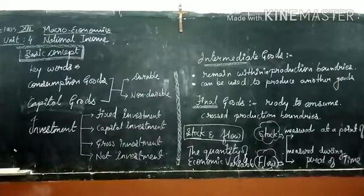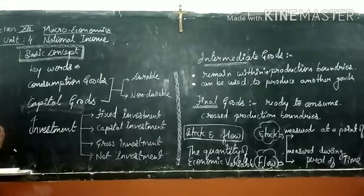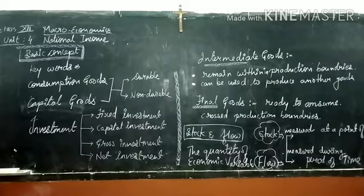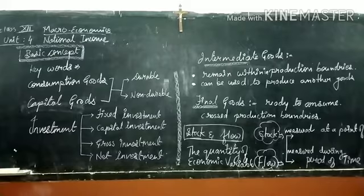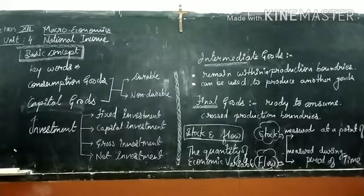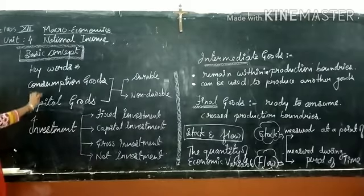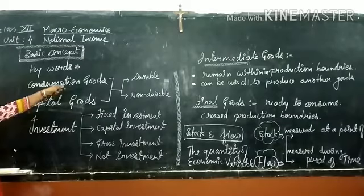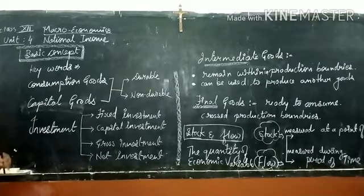Consumption goods are those goods which directly satisfy the wants or desires of the consumer. Capital goods are those goods which are used to produce other goods and services. These goods, both capital and consumption, are classified into two categories: durable and non-durable, on the basis of their long-lasting time.